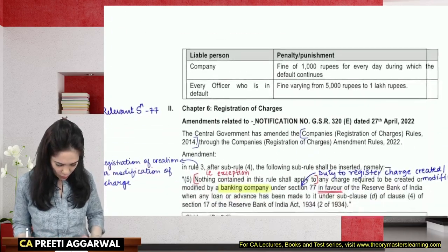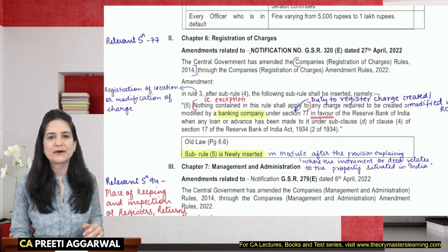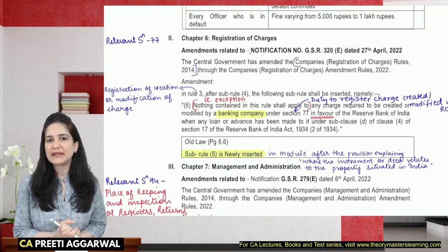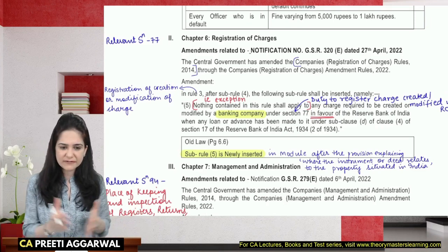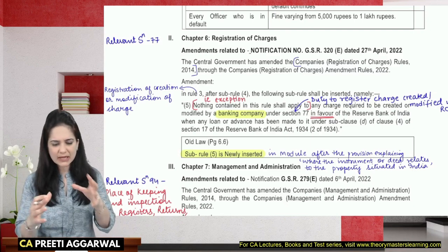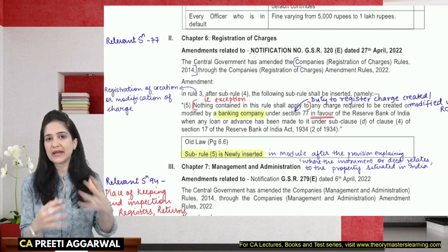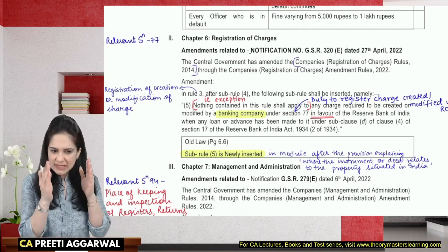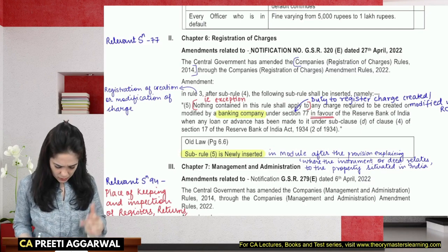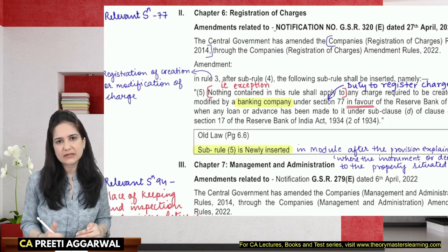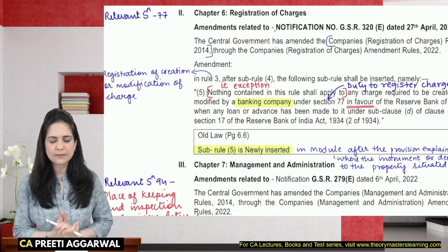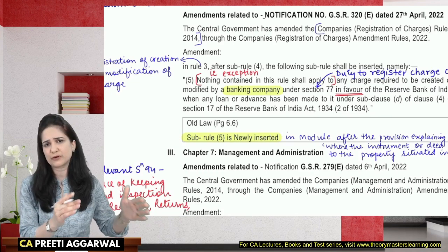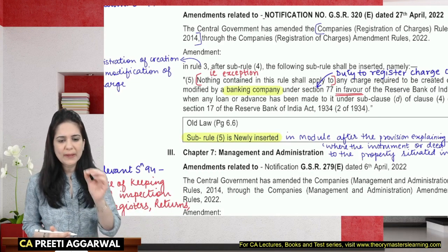The next amendment relates to registration of charges. The amendments are made in the rules. I know that many students do not prefer remembering the names of the rules, and it can be difficult to find them in the module since the module sometimes frames sections and rules together as an answer. I have also written the relevant section so you can easily find it in the module. They have mentioned the page number where this amendment needs to be included — in the old law you will find this on page 6.6.